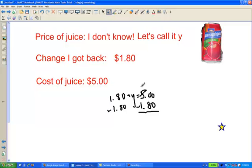And now I'm going to borrow from the 5 here, make that a 4, and make this a 10. 0 minus 0 is 0. 10 minus 8 is going to be 2. Put the decimal down. 4 minus 1 is 3. I get $3.20.